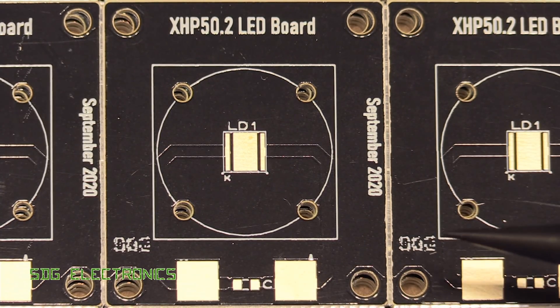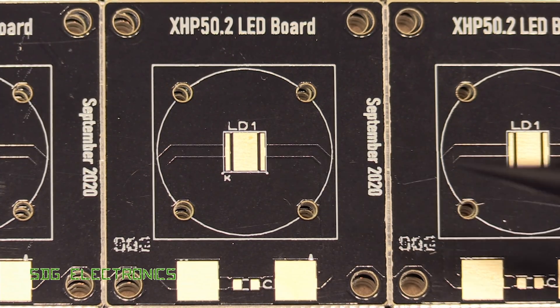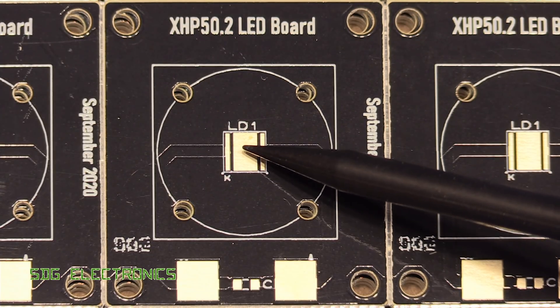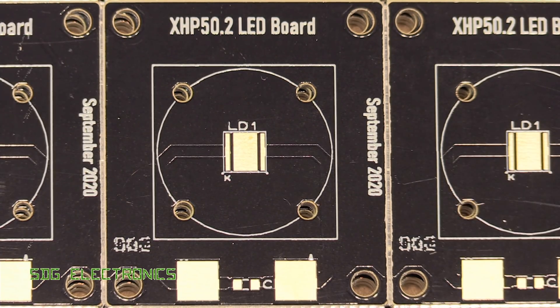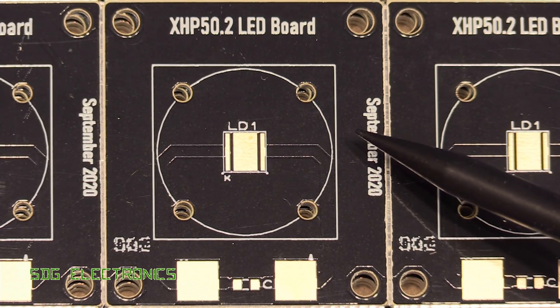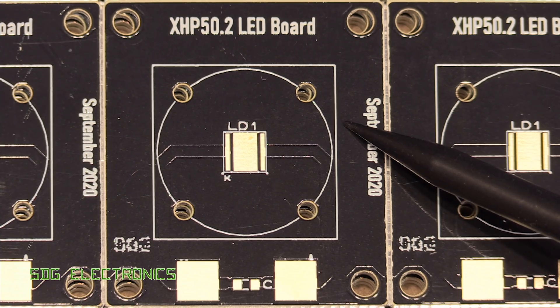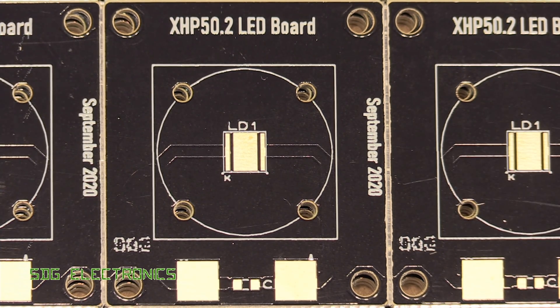On these aluminium PCBs, I've gone for the immersion gold finish. That gives a much more solderable surface even many years down the line. It doesn't oxidise in the same way that some of the other surfaces do. And we've got the black finish on the PCB with the white silkscreen.